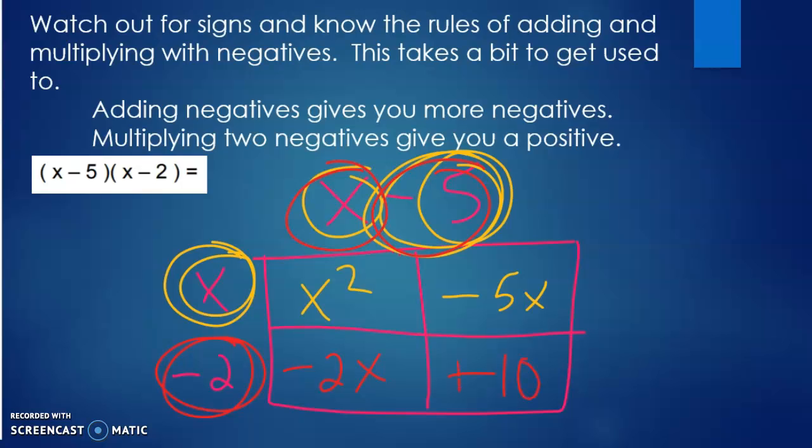Sorry about that. Caught myself. Okay, now we go down the diagonals. That's x squared. That's negative 5x and negative 2x is negative 7x. And a positive 10.